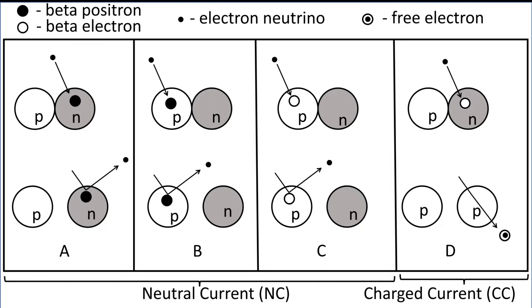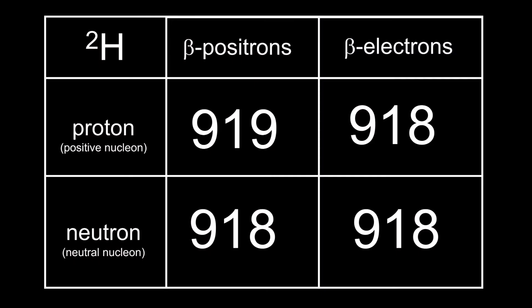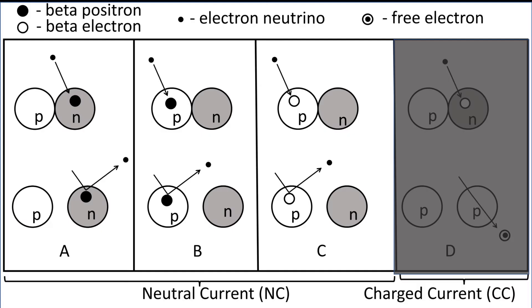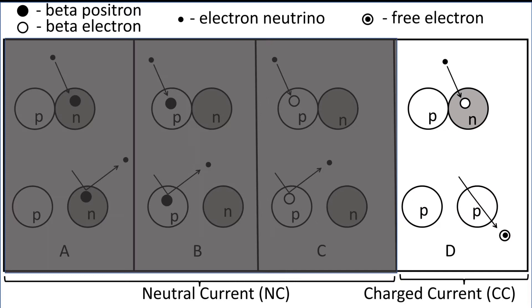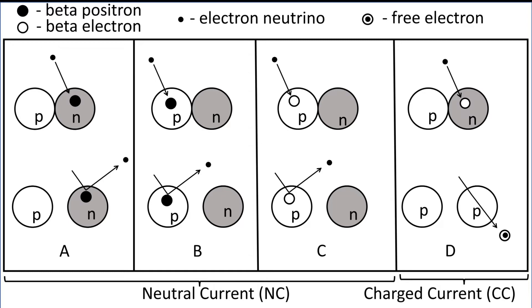All four interactions were induced by electron neutrinos. Since there are essentially the same number of beta electrons as beta positrons in each nucleon in the deuteron, an electron neutrino has an equal probability of encountering either the beta electron or the beta positron in either the neutron or the proton of the deuteron. This means that, on average, three out of every four times an electron neutrino interacts with the deuteron, it will scatter off it — breaking it up into a proton and a neutron, the neutral current reaction. One out of every four times, it will convert the neutron in the deuteron into a proton and split the two nucleons apart, the charged current reaction.